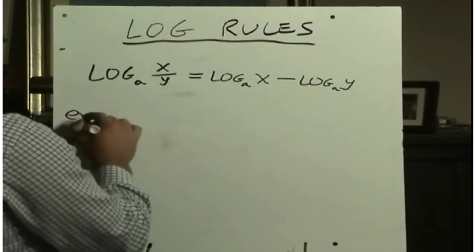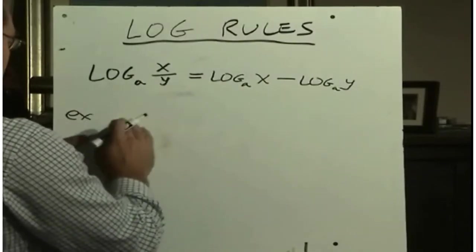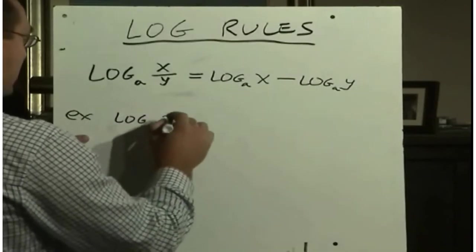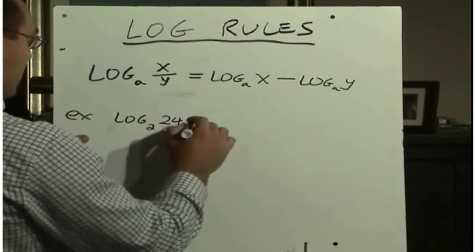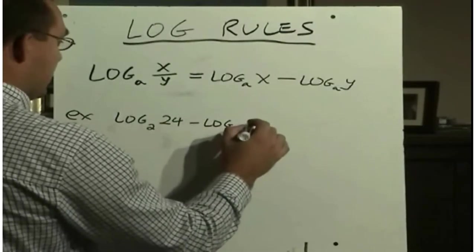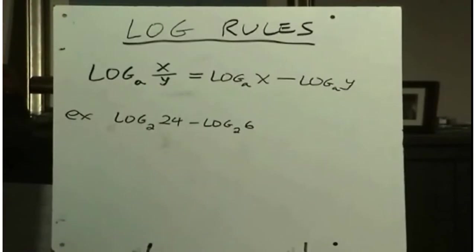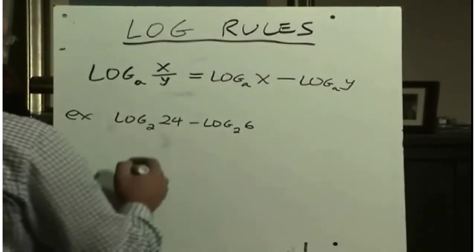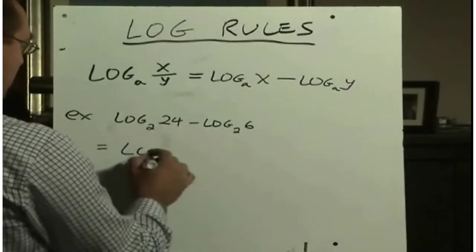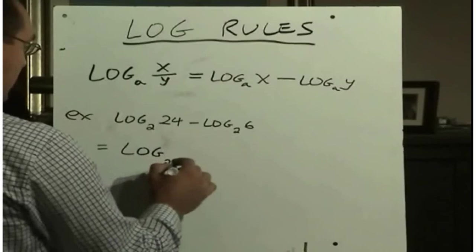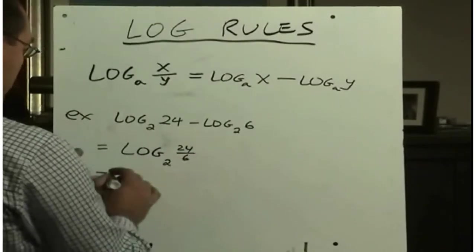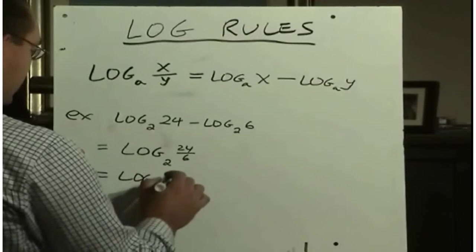So an example, say we have to simplify this. Log base 2 of 24 minus log base 2 of 6. Say we're asked to simplify this. Well, if I have log of something minus log of something, I can say this is log base 2 of 24 divided by 6. And 24 divided by 6 is 4.